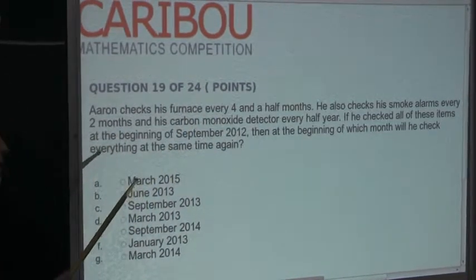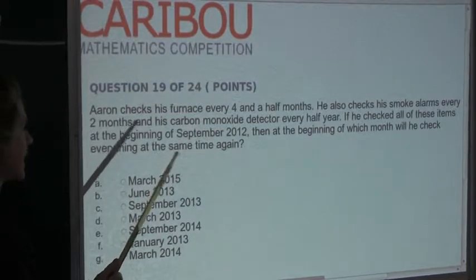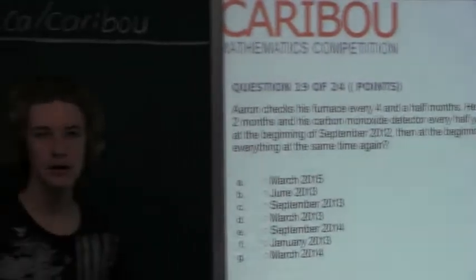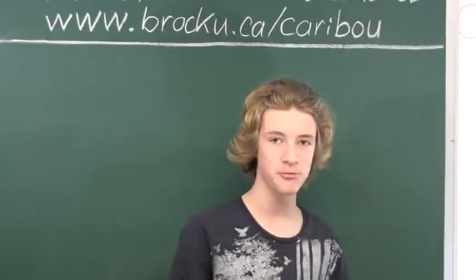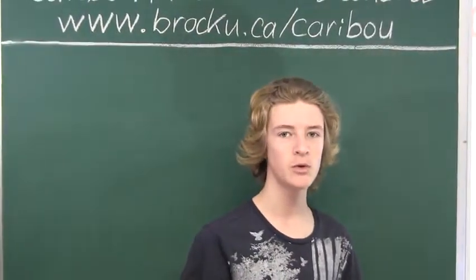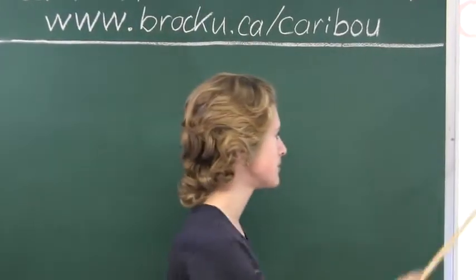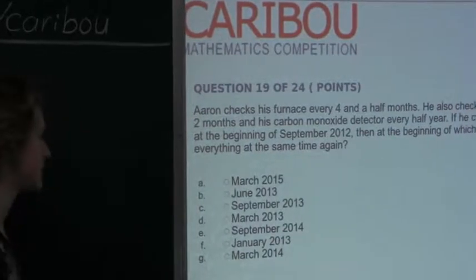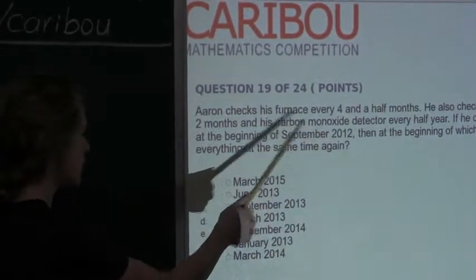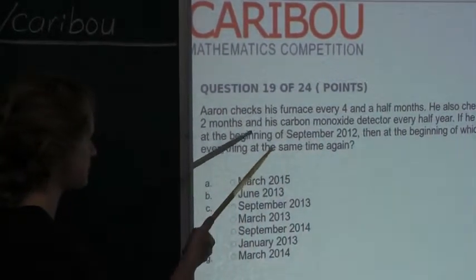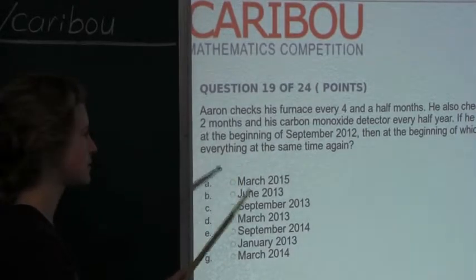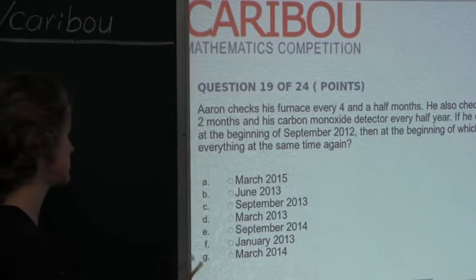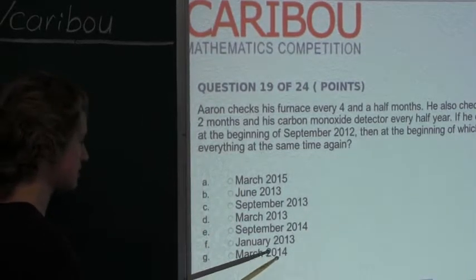The lowest common multiple of nine months, two months, and six months would be 18. So 18 months would be the next time he checks all three at the same time again, 18 months after September 2012. 12 months after September 2012 would be September 2013, and another six months later would be March 2014. So the answer is March 2014.